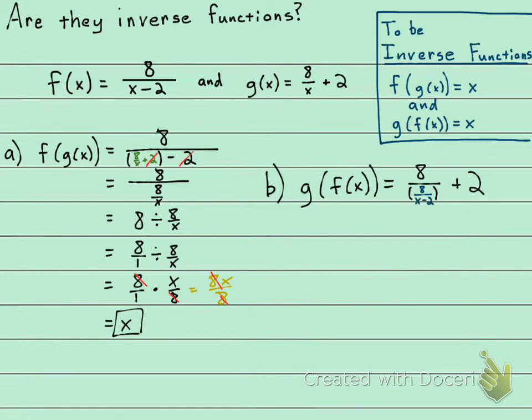So once again, we have a complex fraction here. 8 over 8 over x minus 2. 8 divided by 8 over x minus 2 plus 2. I'm going to call this 8 over 1 divided by 8 over x minus 2 plus 2.